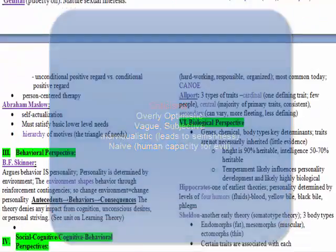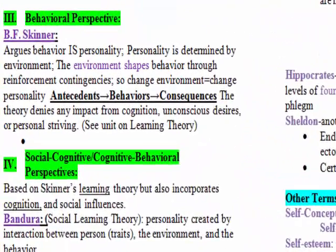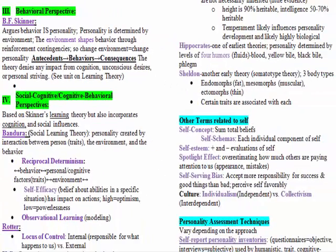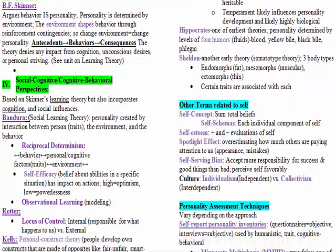Moving into the behavioral perspective — this perspective wasn't around very long. It argues that behavior is personality, and that personality is determined by the environment. The environment shapes our behavior through reinforcement contingencies, and if we can change the environment we can change personality. A key criticism is that it fails to recognize cognition at all, and we know that cognition has to be recognized as part of personality.